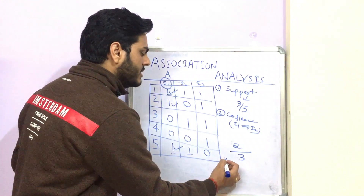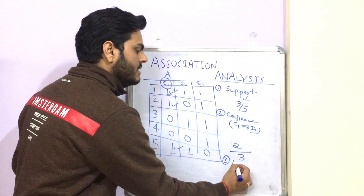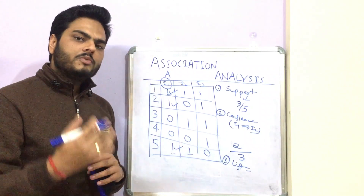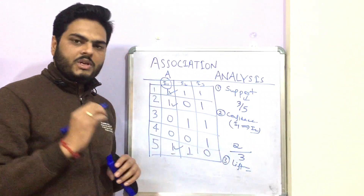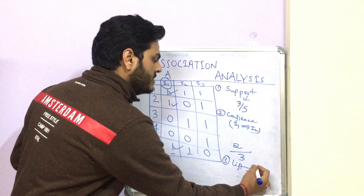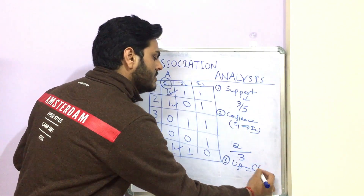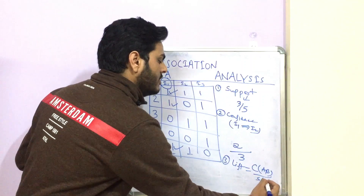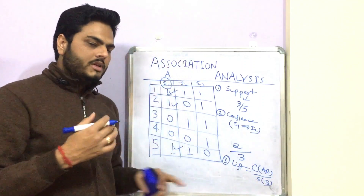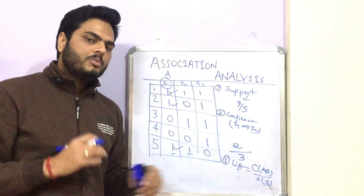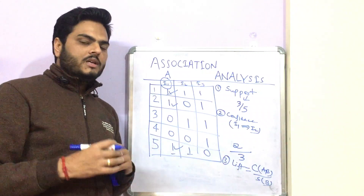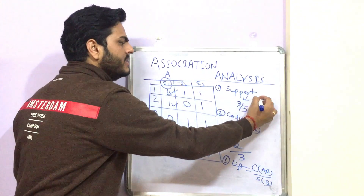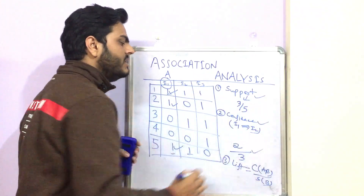The third important metric for association analysis is known as lift. Lift for items A and B together is calculated as the confidence of A and B divided by the support of B. This formula tells you what the lift is for item B.